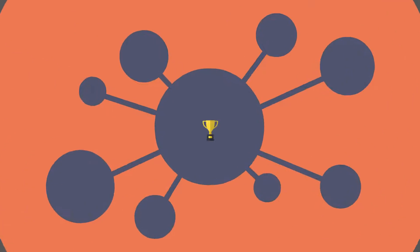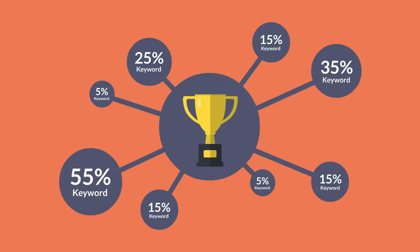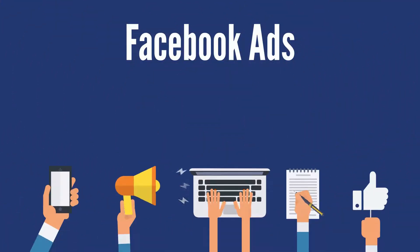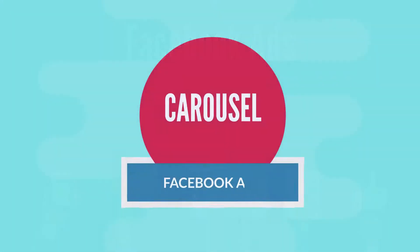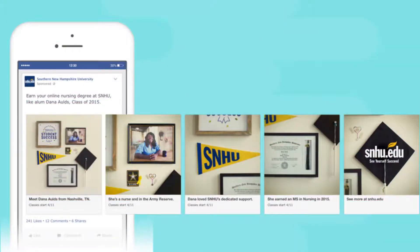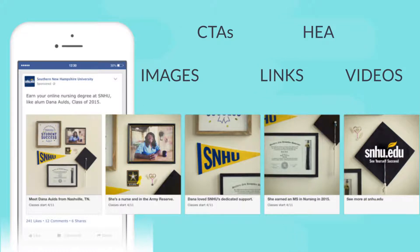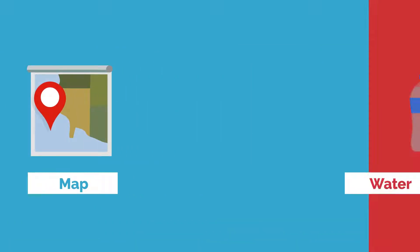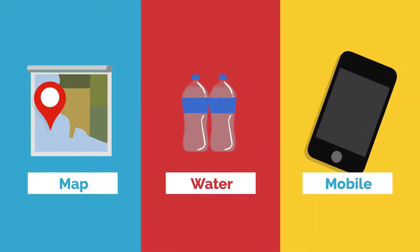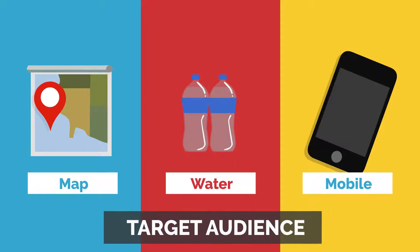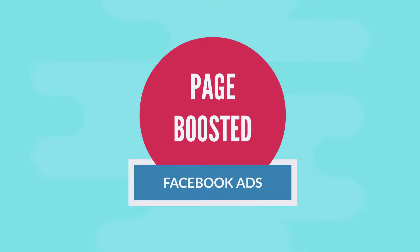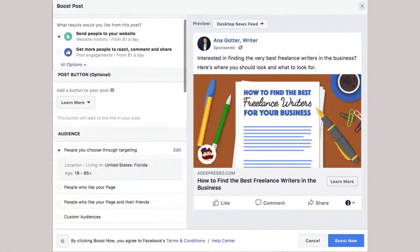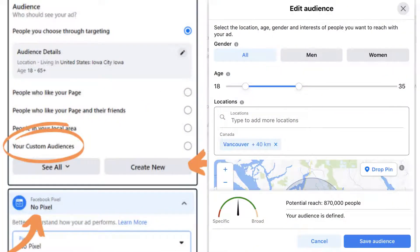Advertisers have diverse campaign objectives, so Facebook gives you many options. Carousel ads allow you to display up to 10 images, videos, CTAs, links, or headlines in a single ad post. It's a great feature when you want to advertise more than one product, multiple links, or offers to find out what works with your target audience.